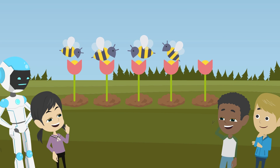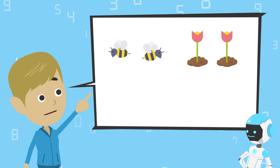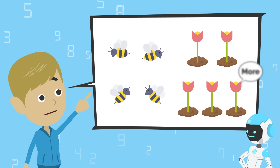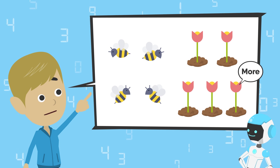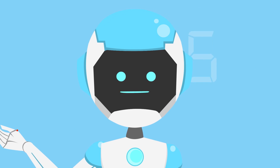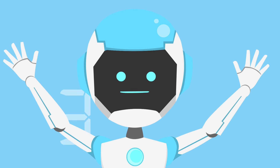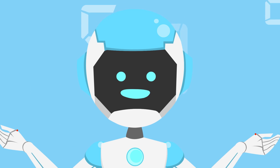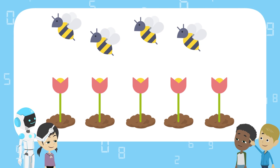So, were there more bees or flowers? There were more flowers. That's right. To know which is more, as you just did, you can connect each item with a line. Okay, that's easy.